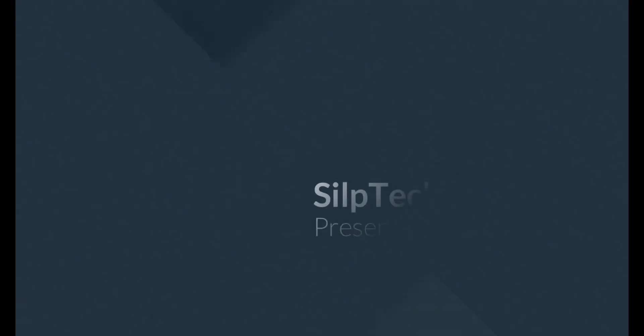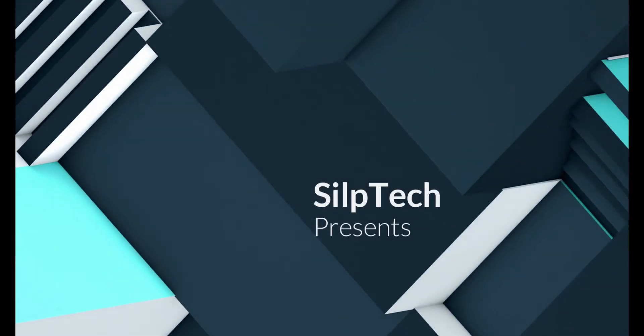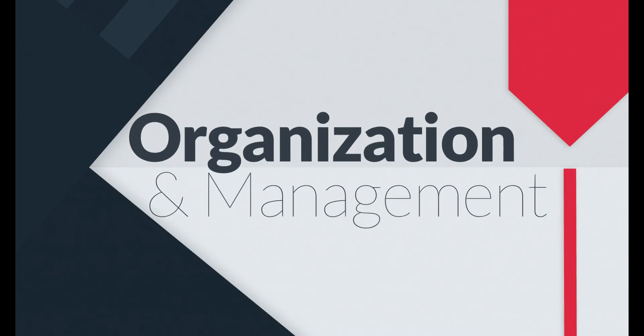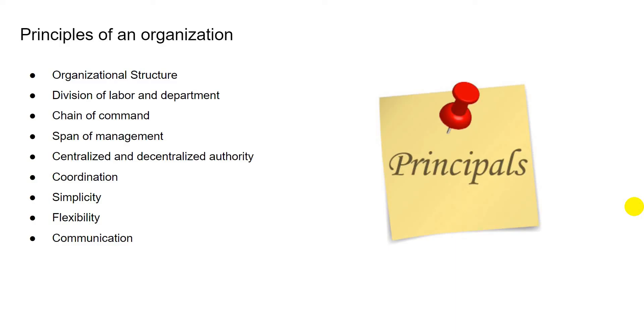In this video we're going to be talking about principles of organization and objectives of an organization. When talking about the principles of an organization, it needs to have an organizational structure, it needs to properly divide its work among its employees as well as departments, and it needs to have a proper chain of command.